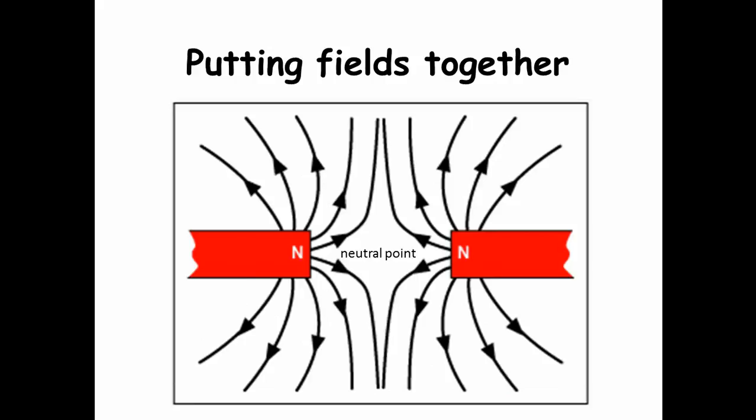However, when you're trying to put two like poles, like a north and a north, the field lines are not allowed to touch each other, so they actually end up pushing away from each other, and this causes the repulsion. That point in the centre is called the neutral point.